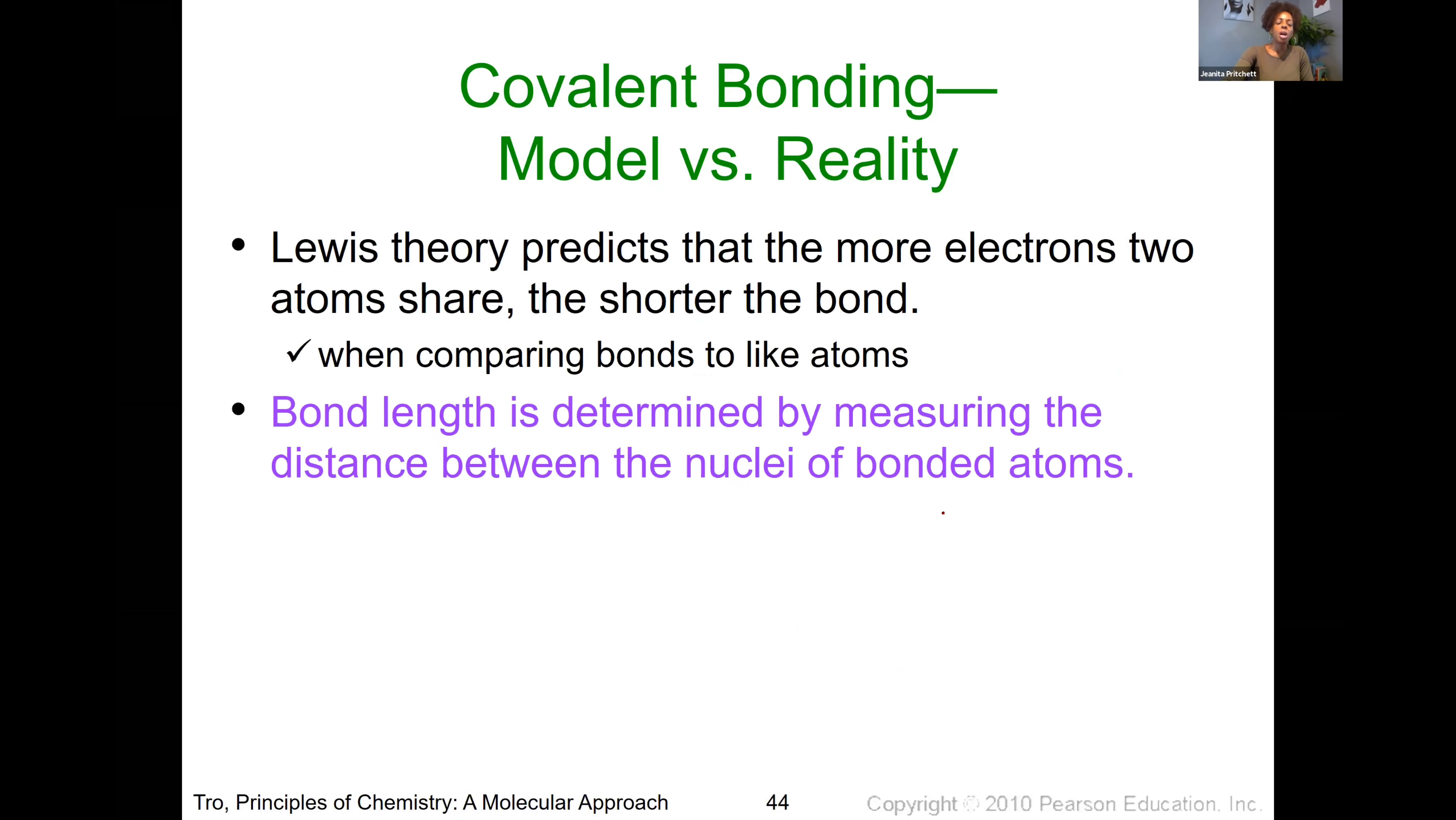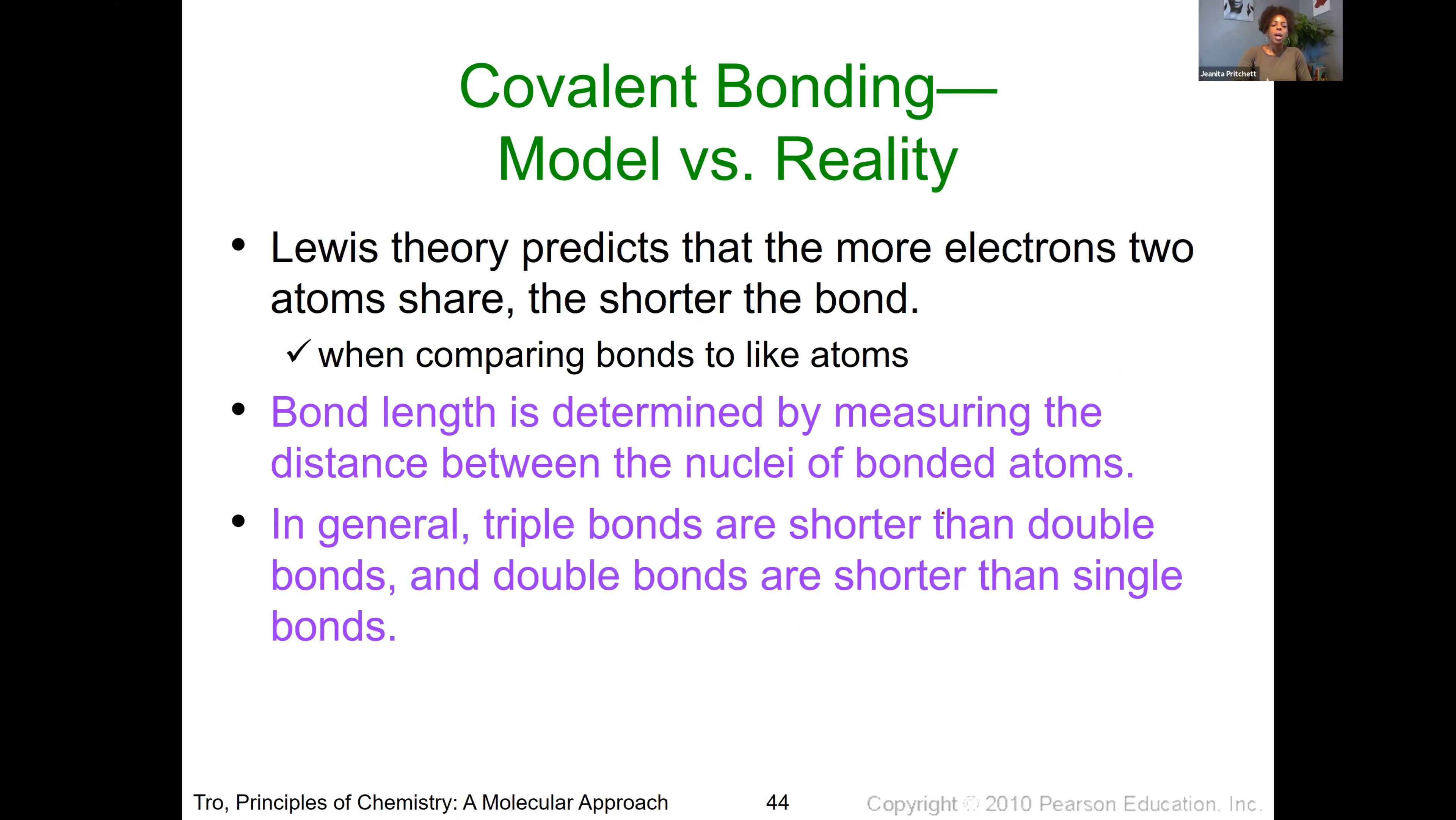And then one other piece of model versus reality. The Lewis theory does predict that the more electrons that are being shared between atoms, the shorter it will be. Basically, those connecting points are able to pull those atoms close to one another. They're holding on to each other very tightly. Now, the bond length is going to be determined by those electrons that are present. So in general, what you will see is that triple bonds are much shorter than double bonds, which are much shorter than single bonds. So single bonds are the longest, but also the weakest type of bond. Triple bonds are the shortest, but also the strongest.